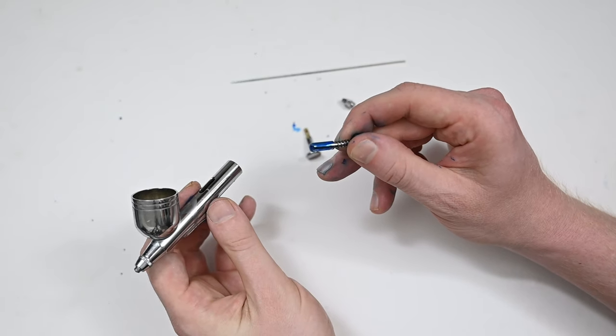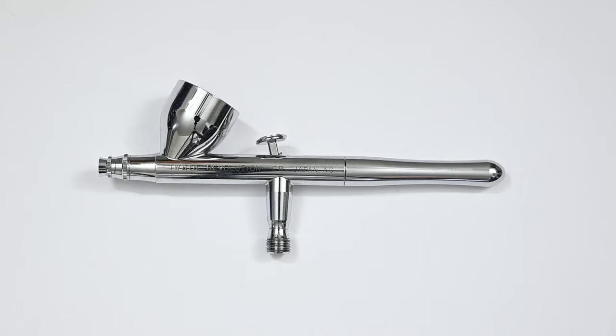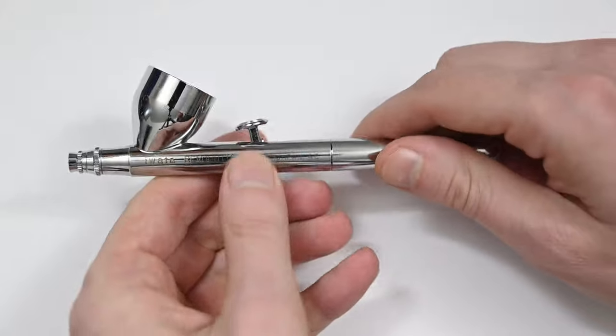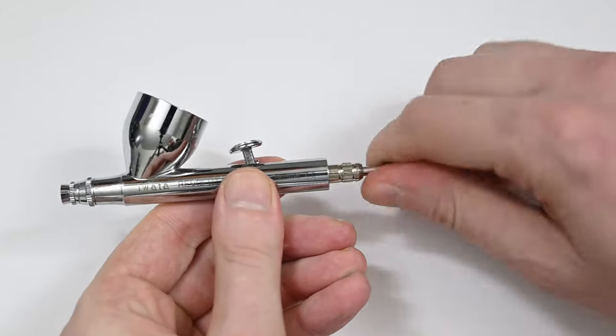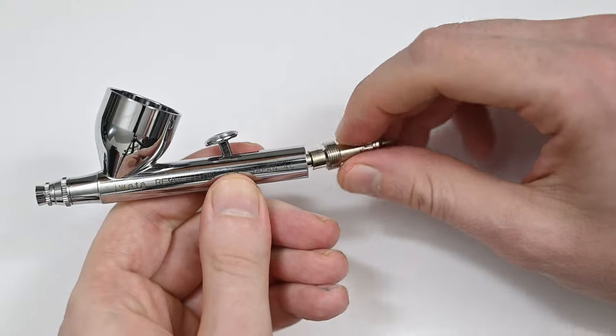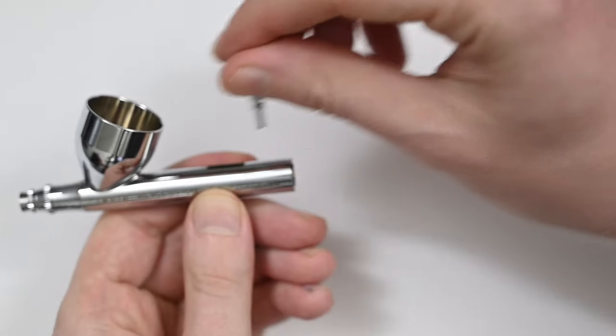So in order to prevent this and keep all that paint in the front of the airbrush, what we need to do is check the needle packing screw. And the first thing I want to do here is to show you how to get to that screw. I'm taking off the rear handle, the chuck, the needle, and this whole spring assembly along with the trigger.